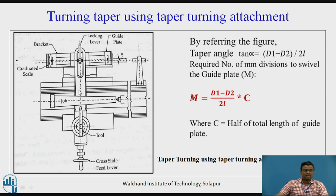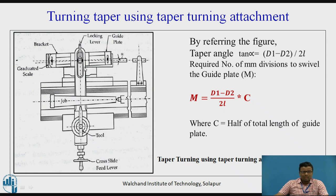The working principle of the taper turning attachment involves several components. First, there is the main bracket, which consists of a graduated scale for the angle. Then there is the guiding plate, which has a particular slot. In this slot there is block B, which slides along the slot. Whenever the guiding plate is set to angle alpha, block B slides at that angle.